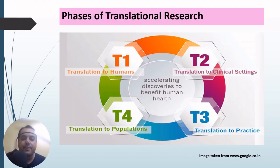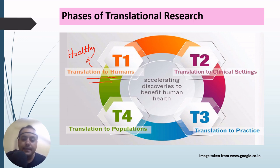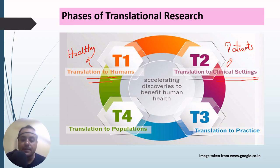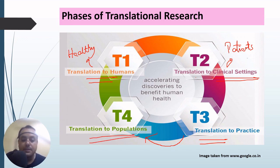Translational research has four classical phases: T1, T2, T3, and T4. In T1, the research is first translated into humans — specifically healthy humans in early clinical trials. This knowledge then moves into T2, where it is applied to clinical settings with patients. From those clinical trials, the findings are put into practice in T3. Once conclusive results are obtained, the knowledge is translated to the population in T4, resulting in a health benefit for all.